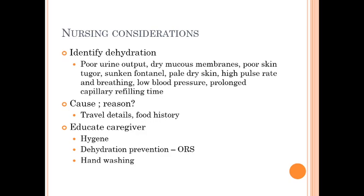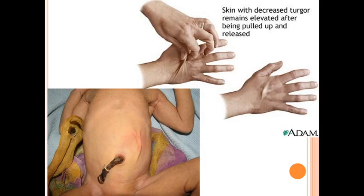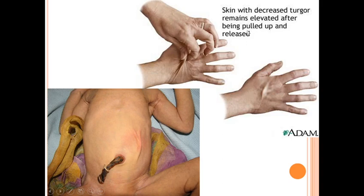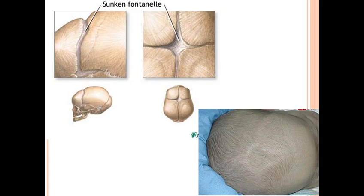Nursing considerations include identifying dehydration. Signs include prolonged capillary refill time, low blood pressure, sunken fontanels, dry and pale skin, very poor skin turgor, dry mucous membranes, and poor urine output. Skin turgor is assessed by pulling up the skin — if dehydrated, the skin remains elevated after being released rather than snapping back immediately.